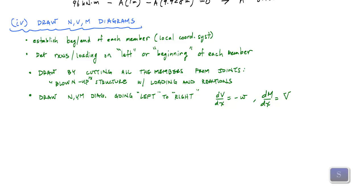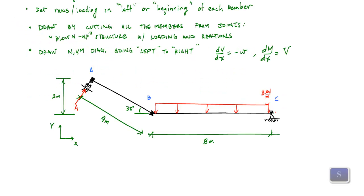After all this discussion, let's get to it. I want to establish the beginnings and ends of each member. I could do that by just labeling each of these — here's end i, end j, end i, end j of member BC.